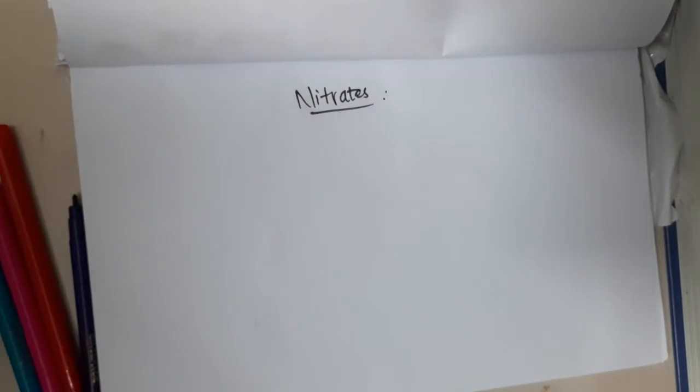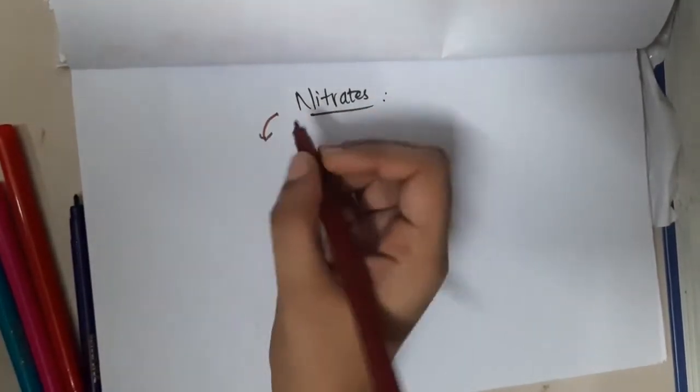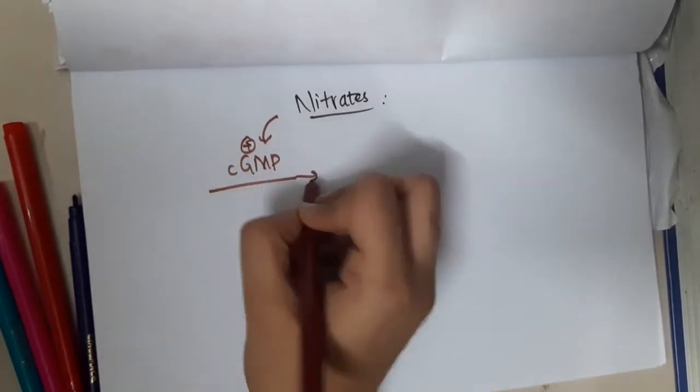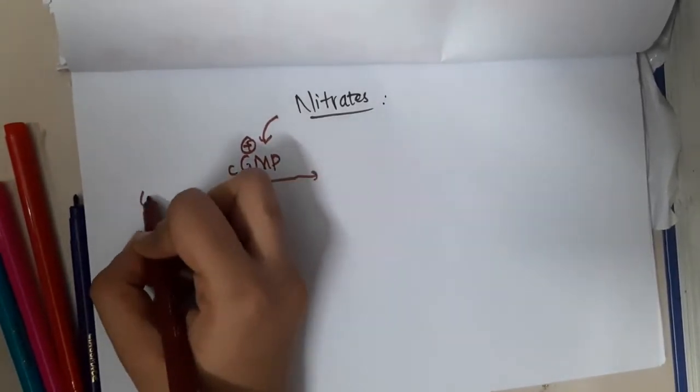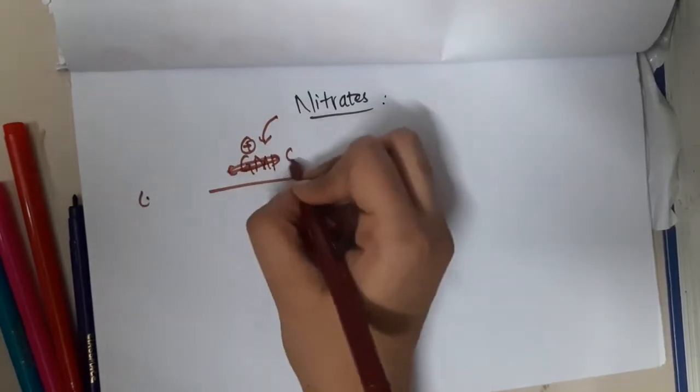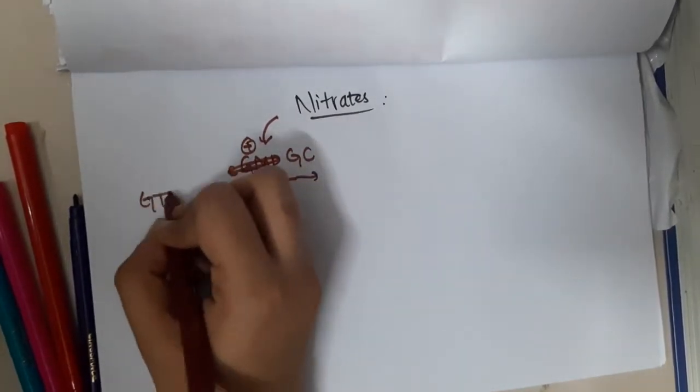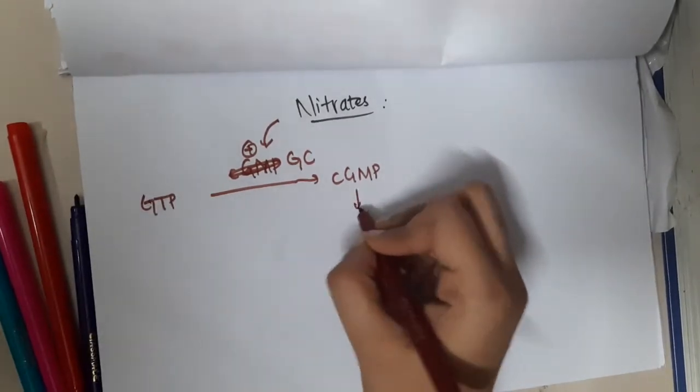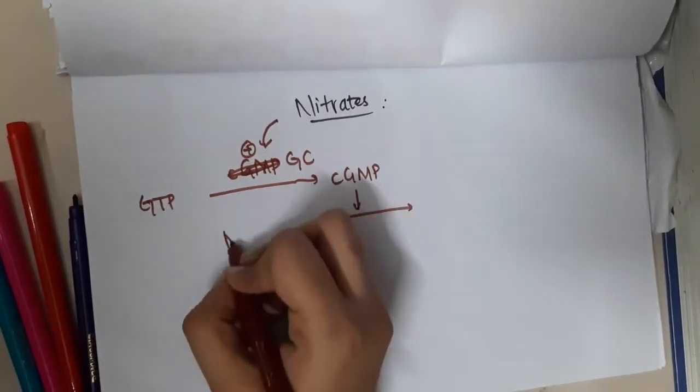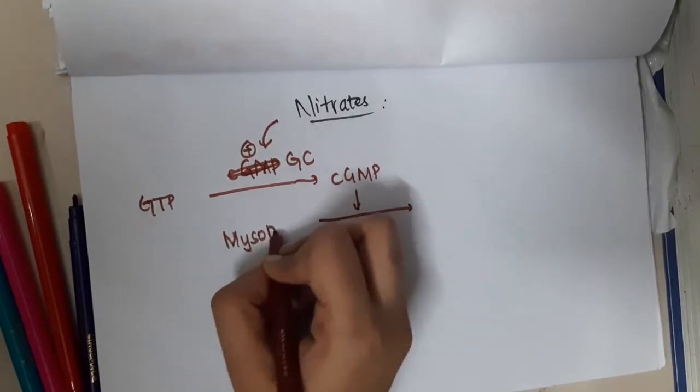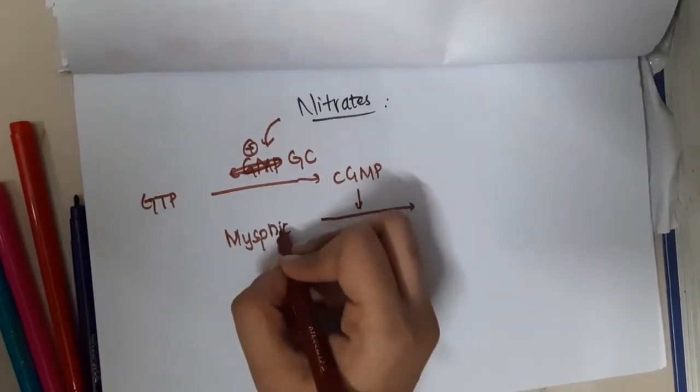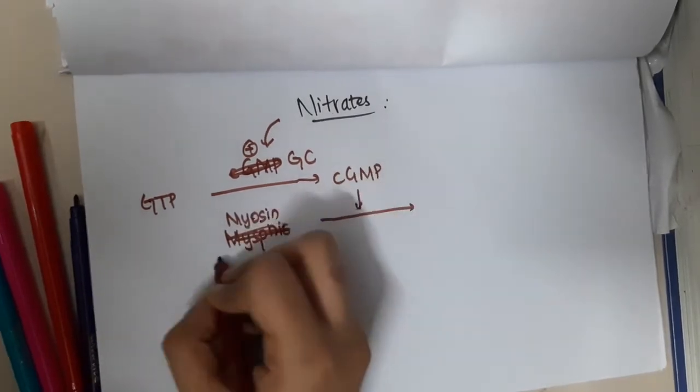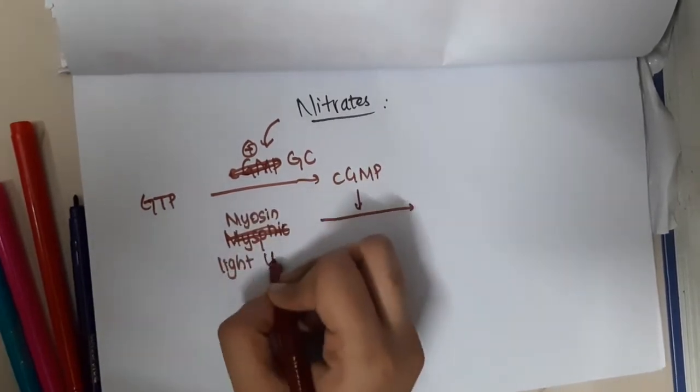Nitrates act by activating cyclic GMP level, which causes GTP. First, it activates guanylyl cyclase and thus it activates GTP to cyclic GMP. This cyclic GMP will cause myosin light chain kinase dephosphorylation.